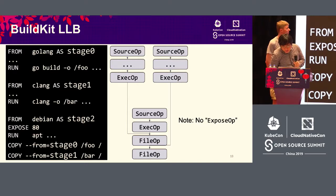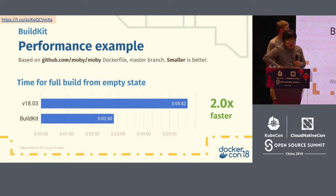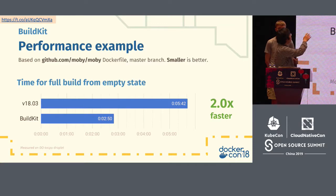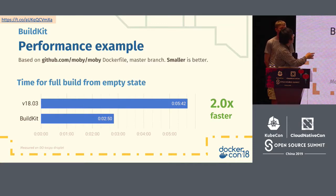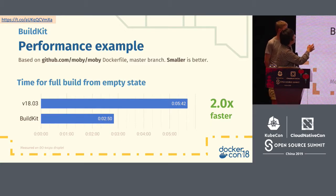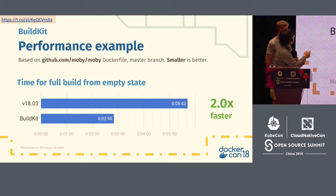So it's very fast. For example, if we build github.com/mobile/mobile using Docker build, with legacy Docker build it takes 5 minutes and 42 seconds. But with BuildKit, it just takes 2 minutes and 50 seconds. So it's 2 times faster.